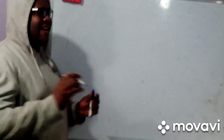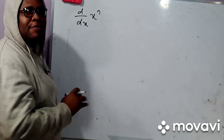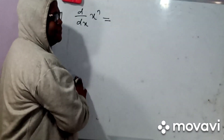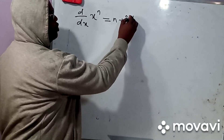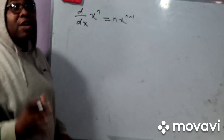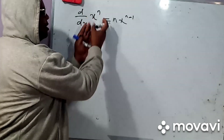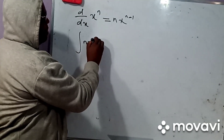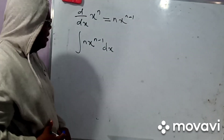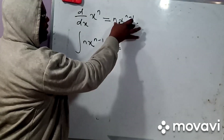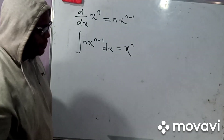Welcome back. Now, consider whenever we differentiate with respect to X and we have X to the power N — we know what our answer is simply going to be. We bring down the power N, giving X to the power N minus 1. That is very simple. So, this integral symbol means that when I integrate N·X^(N-1) dx, where dx simply means with respect to X, I should be able to get X to the power N back.